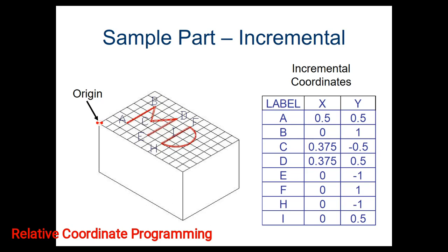One thing to look at for point I: I is being given relative to H. We'll talk about that more when we look at our code, but they're giving that center point coordinate relative to H — that is where we would be at. We have to understand where we are in the course of our program. We're assuming we'd be sitting at point H when we're getting ready to do that arc. To do that arc, we need to refer to our center point by its relative coordinates from point H. That's why it's 0 in the X because we didn't move left or right at all, but we went up a half unit from H to get to I.